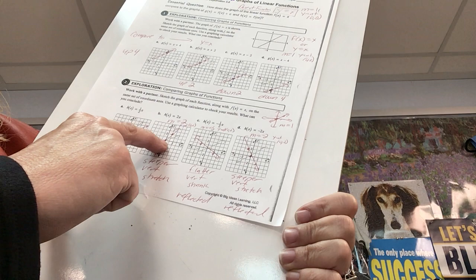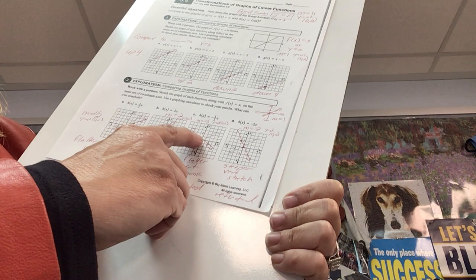Let's take a look at this one. We know the slope is 2, y-intercept 0, 0. I went up 2, right 1. This is steeper. The math term for that is called a vertical stretch.